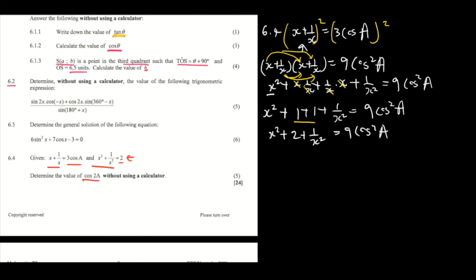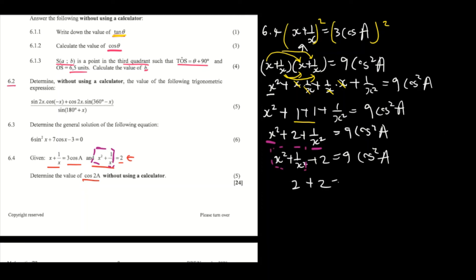Now notice that x² + 1/x² is the same as the given condition, which equals 2. So we substitute: 2 + 2 equals 9cos²(a), giving us 4 equals 9cos²(a).